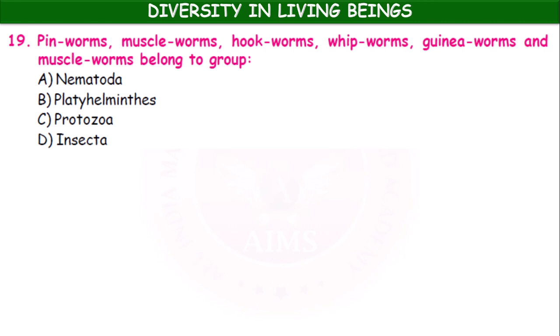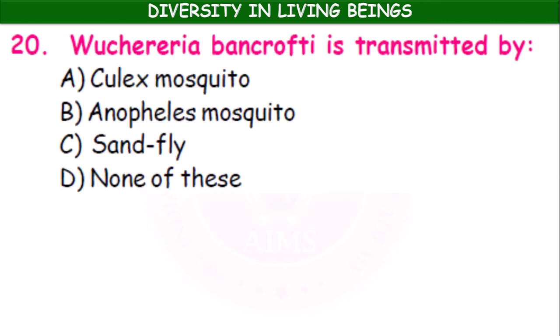Pinworms, muscleworms, hookworms, whipworms, guinea worms, and muscleworms all belong to the group Nematoda. Wuchereria bancrofti is transmitted by the Culex mosquito.